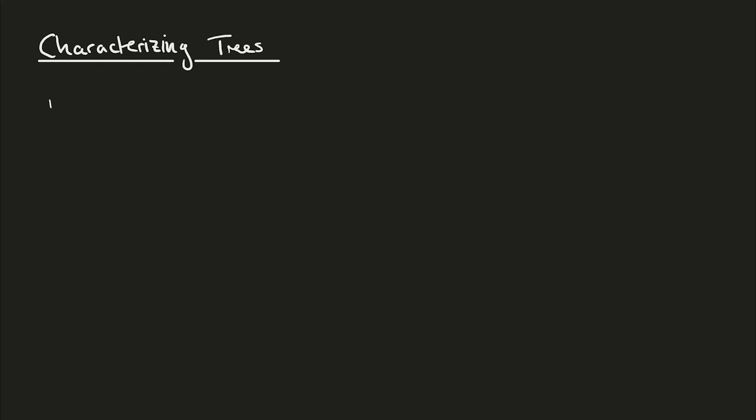Welcome back to this series on graph theory. Last time we defined trees, and this time we're going to look at ways of characterizing trees. We're going to give four equivalent ways to look at a tree. Before starting, let's quickly recall the definition: a tree is an acyclic connected graph.